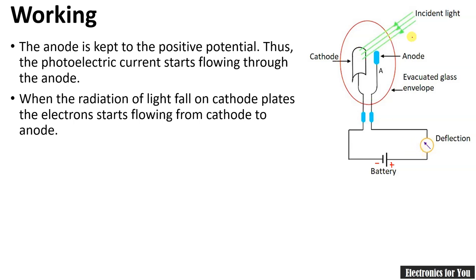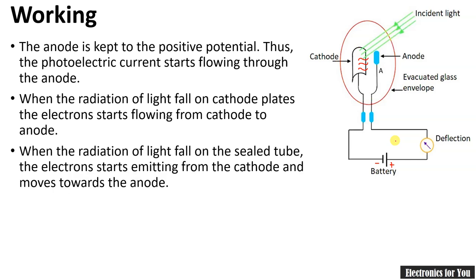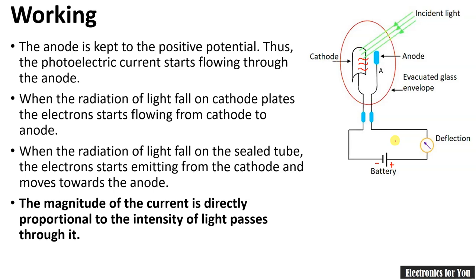In normal condition, when light does not fall on the cell, it will not conduct current, and therefore there will be no deflection in the meter. But when light is incident on the cathode of the photoemissive cell, it will emit electrons, and those electrons are captured by the anode because the anode terminal is positive. The electrons are attracted towards the anode, and therefore current starts flowing from the anode to the cathode. Overall, the current is dependent on the amount of light — the magnitude of the current is directly proportional to the intensity of light.